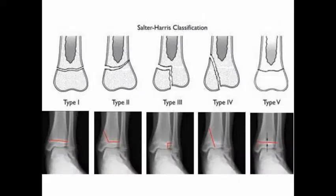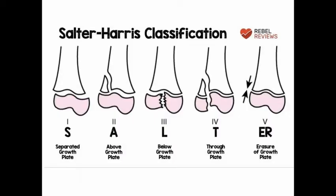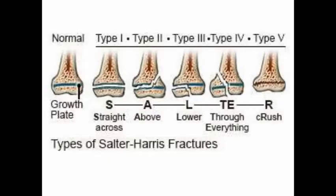In this picture you can see the X-ray for the five types of Salter-Harris fractures. In another picture, the fractures can be remembered clearly: in Type 1 there is a separated growth plate; Type 2 is a fracture above the growth plate; Type 3 is below the growth plate; Type 4 is through the growth plate including the metaphysis, physis, and epiphysis; and Type 5 is a crush injury.